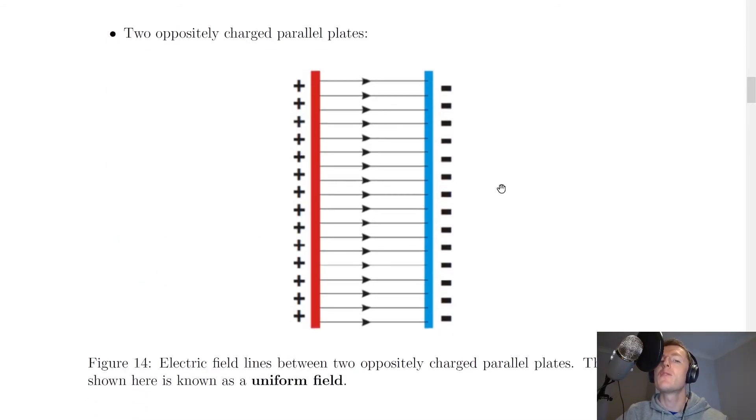So if we look back at this uniform electric field, for example, notice how the field lines are going from left to right. So our positively charged particle here would move from left to right. And that makes sense because it's going to be repelled away from the positive plate and attracted towards the negative plate.